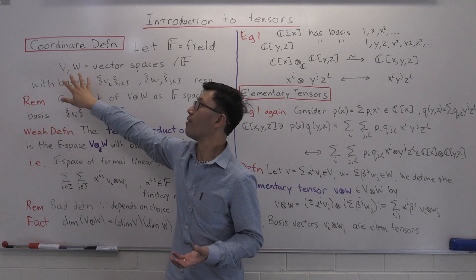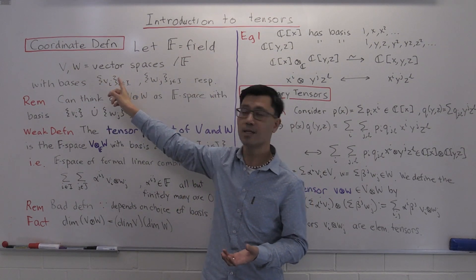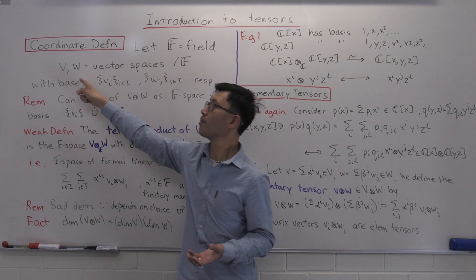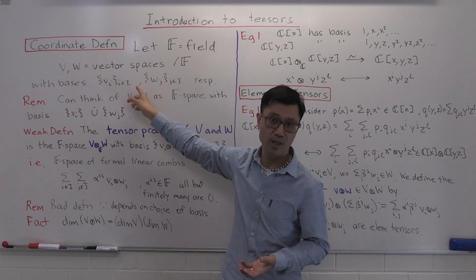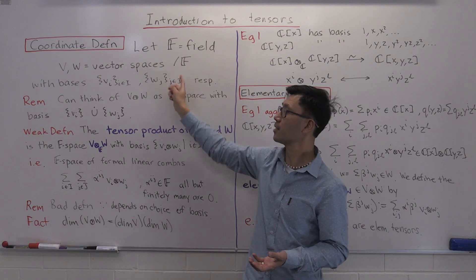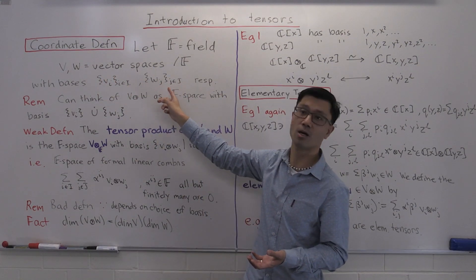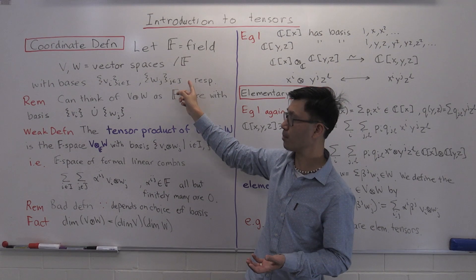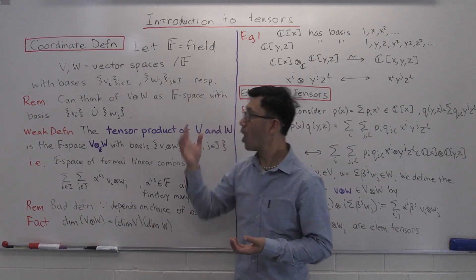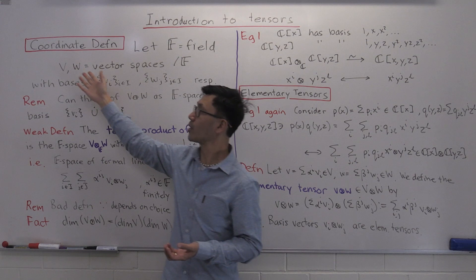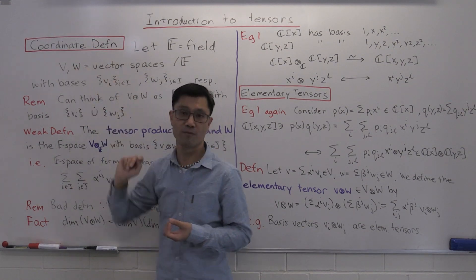To have a coordinate definition we need some bases, so let's suppose we have bases for V and W. The basis for V consists of these little v_i's where i runs through the indexing set I, and the other basis for W is the w_j's as j runs through J. To motivate this definition, you might want to think about what are ways we can build a vector space from these two vector spaces.